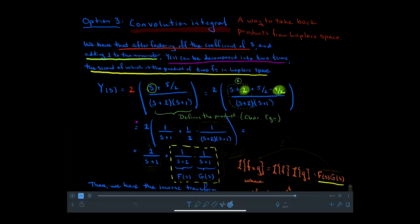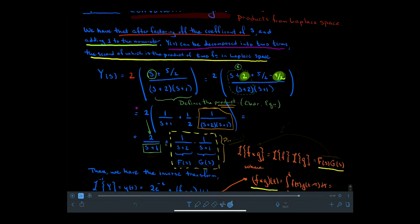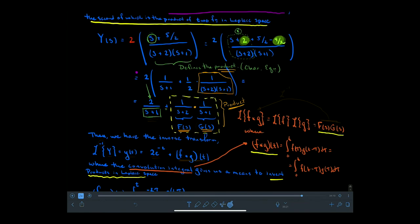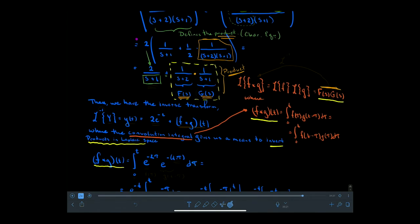After that's done, we have a term with no S's in the numerator that defines the product: I can view the quadratic in the denominator as 1 over S plus 2 times 1 over S plus 1, where 1 over S plus 2 defines F of S and 1 over S plus 1 defines G of S. Now we invert this product by taking the inverse transform of F of S times G of S, mapping it back to F convolved with G. So the inverse transform of capital Y gives us 2e to the negative T plus the convolution of f and g.